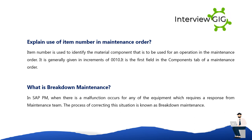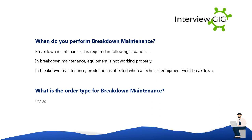What is breakdown maintenance in SAP PM? When a malfunction occurs for any equipment which requires a response from the maintenance team, the process of correcting this situation is known as breakdown maintenance. It is required when equipment is not working properly and production is affected when the technical equipment breaks down.